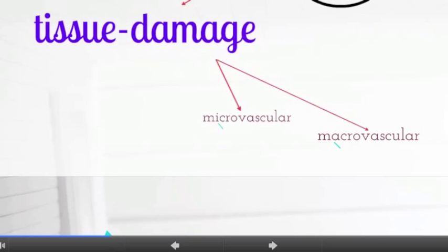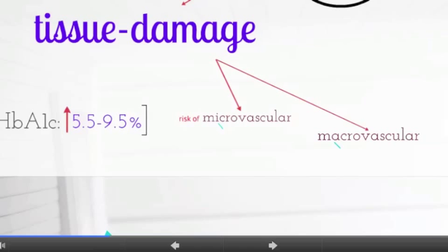Data from these trials indicated that as hemoglobin A1c increases from 5.5 to 9.5%, the risk of microvascular disease increases approximately tenfold, whereas the risk of macrovascular disease increases twofold, suggesting that other factors may be involved in the development of diabetic macrovascular disease.